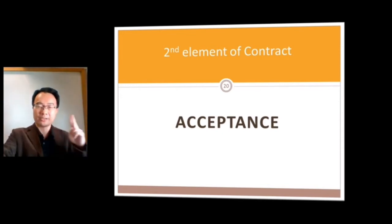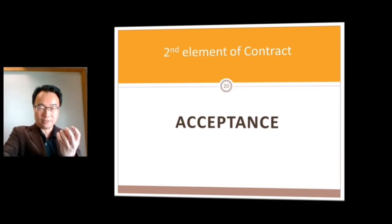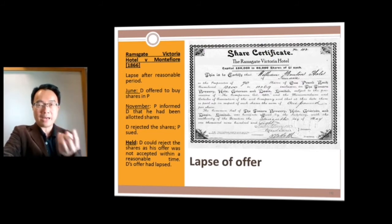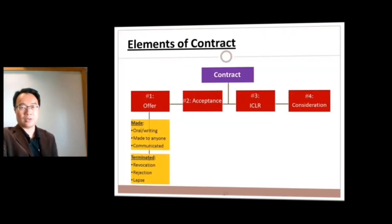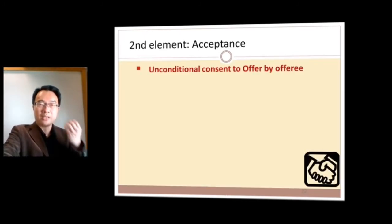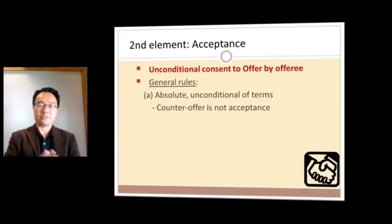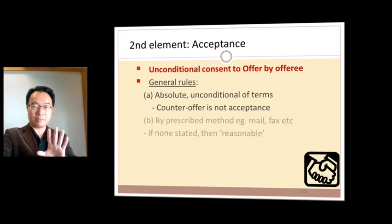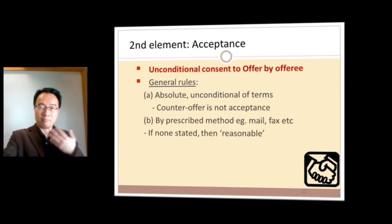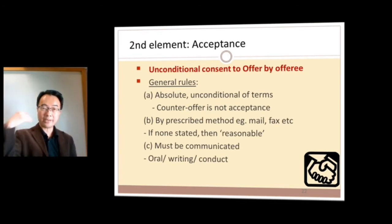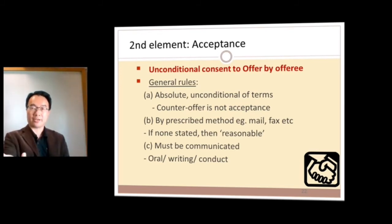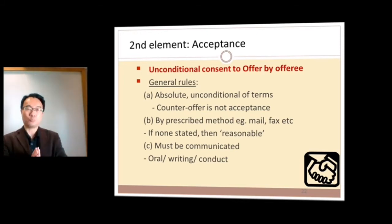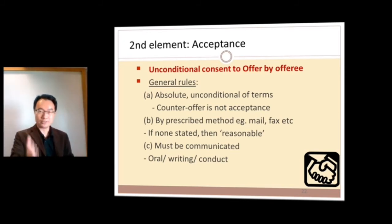That's the first element of contract. Let's look at the second element: acceptance. For a proper valid offer, you must accept it unconditionally — say 'yes, I absolutely accept' without making any counteroffer. You can reply by mail or fax, and if no means are stated, then a reasonable means. You can accept orally, in writing, or even by conduct such as shaking hands. Oral offer plus oral acceptance gives you an oral contract. Many people think only written contracts are valid, but even an oral contract is valid — just harder to prove.